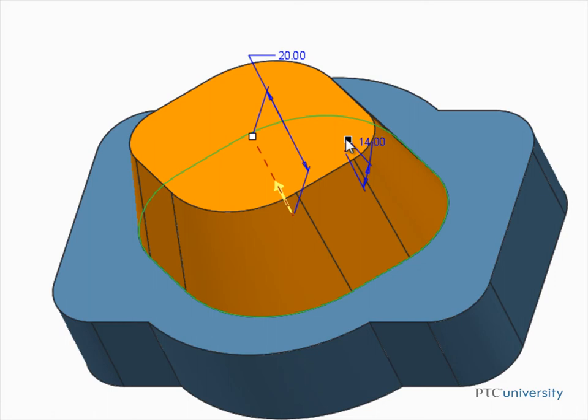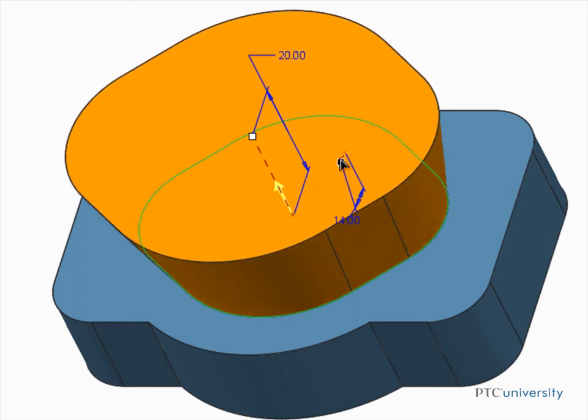When adding taper, the sketch plane of the extrude becomes the pivot plane. This is the plane that the angle of taper is defined from. You can see that the taper angle is pivoting about this plane.